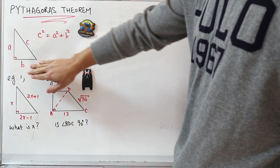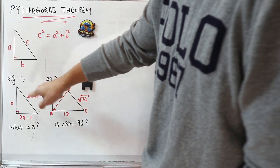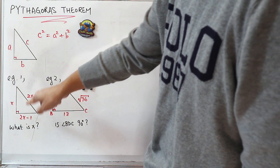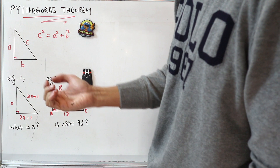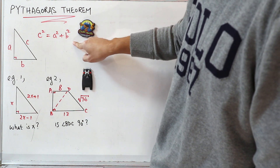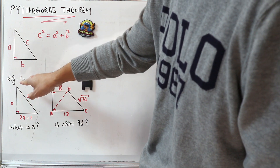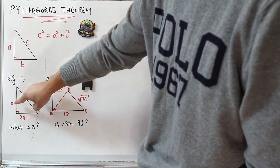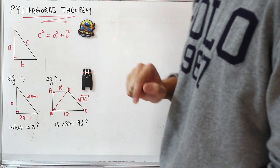Without further ado, let's start working on example number one. For example number one, you are given a figure like this, and note that this is a right-angled triangle. So immediately, you know that you may be able to apply Pythagoras Theorem. In this example, you are given the length of each side in terms of x: x, 2x minus 1, and 2x plus 1.